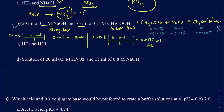Let's look at the next one: HF and HCl. It turns out they're both acids. HF is the weak acid and HCl is a strong acid. You can't have two acids and expect to create a buffer, so no buffer on that one.